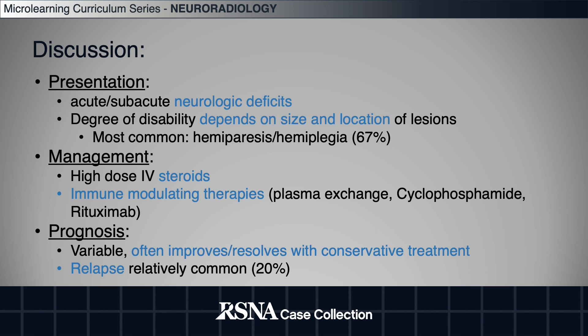Treatment is with high-dose IV steroids or immune-modulating therapies, such as plasma exchange, cyclophosphamide, or rituximab. Prognosis is variable and can improve or fully resolve with conservative treatment. However, relapse is relatively common.